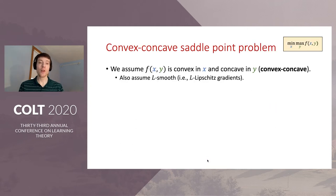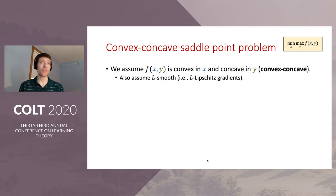In this paper, we consider the convex-concave saddle point problem, which means that f(x,y) is convex in x and concave in y. We also assume that f is L-smooth, meaning it has L-Lipschitz gradients. Even though many applications of the saddle point problem are not convex-concave, assuming convexity-concavity and proving theoretical results under this assumption can give us intuitions, algorithms, and techniques which hopefully carry over to the non-convex case.